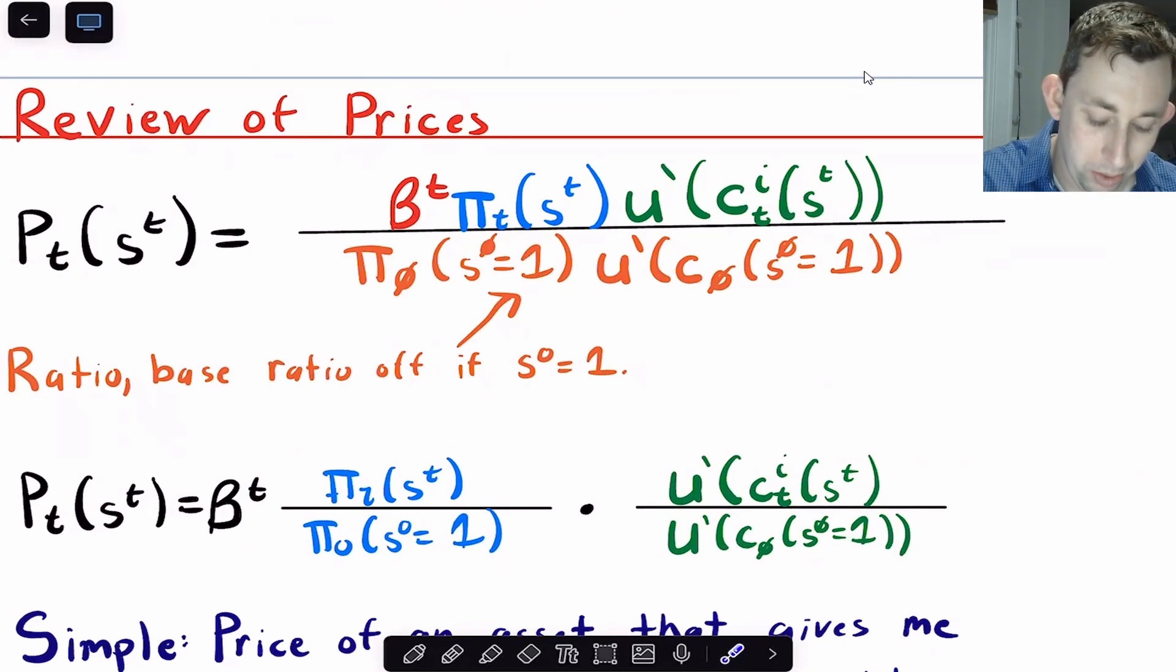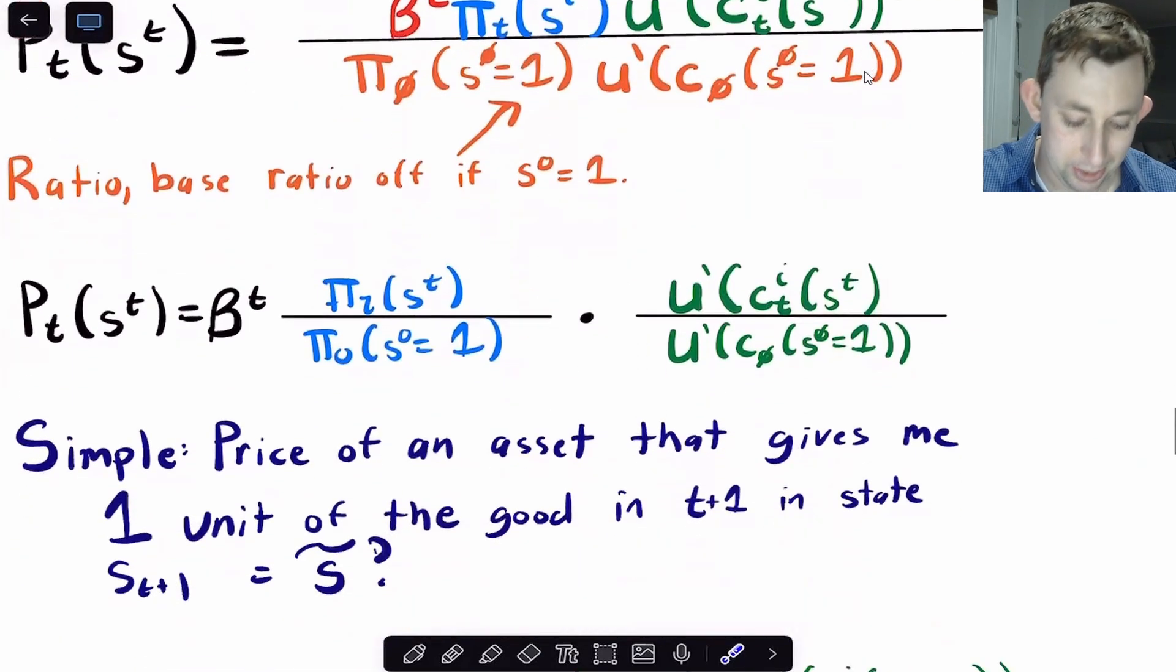Now here's where we start getting into the asset pricing. So when we did that video on Arrow-Debreu equilibrium with uncertainty, when we did those first-order conditions, we basically got that what's going to happen is that PT of ST, it's going to be the time discount factor times the probability of a certain event history times the marginal utility, and that's going to be divided by the probability of some base state, so that some reference state of the world in reference to maybe it's sunny outside on day zero. So if we just split this up a little bit, what you're going to see is that we have the time discount factor, the relative probability of that state, the marginal utility of that state, with respect to, or sort of scaled by, this sort of reference utility in a base state.